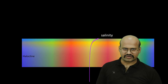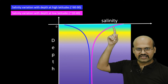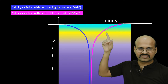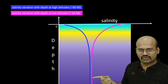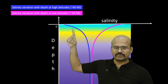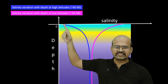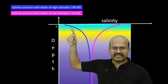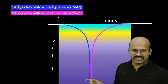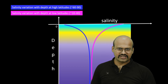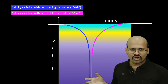If we plot both of these curves together: in the equatorial and tropical regions, salinity starts from a higher value at the surface and then decreases; while in higher latitudes and polar regions, salinity at the surface is low but increases as we go deeper, then becomes constant. We can see that in the deeper parts of the ocean, in both polar and equatorial regions, the salinity is almost equal.